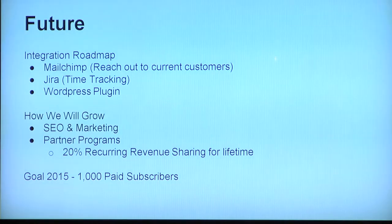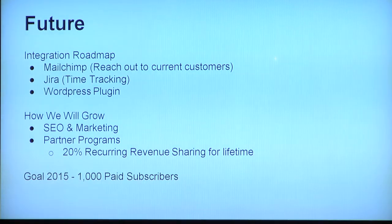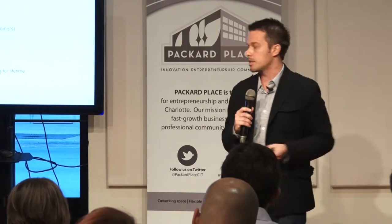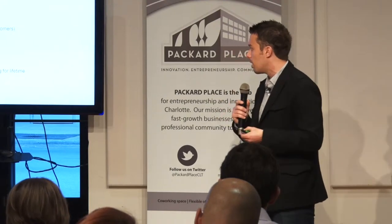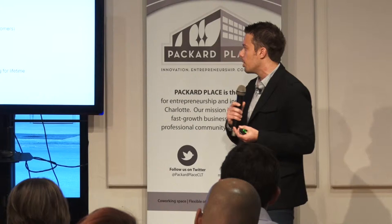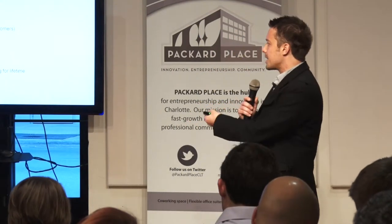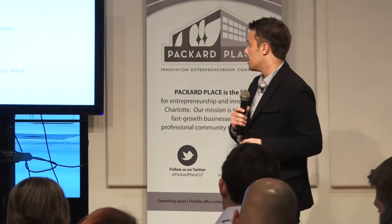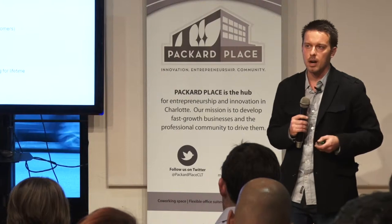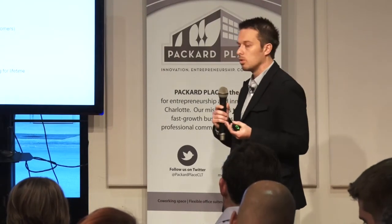Looking ahead, we are currently working on an integration roadmap. One of the biggest integrations we want to build is with Mailchimp — so once you've invoiced your clients, you can import that list, send them a holiday card, and potentially get more business. We're also planning Jira for time tracking and a WordPress plugin. Growth will come through SEO marketing and partner programs. Partners can resell our product and receive 20% commission for the lifetime of the customer. Our goal for 2015 is 1,000 paid subscribers; we currently have a few hundred people signed up and a number of paid subscribers.